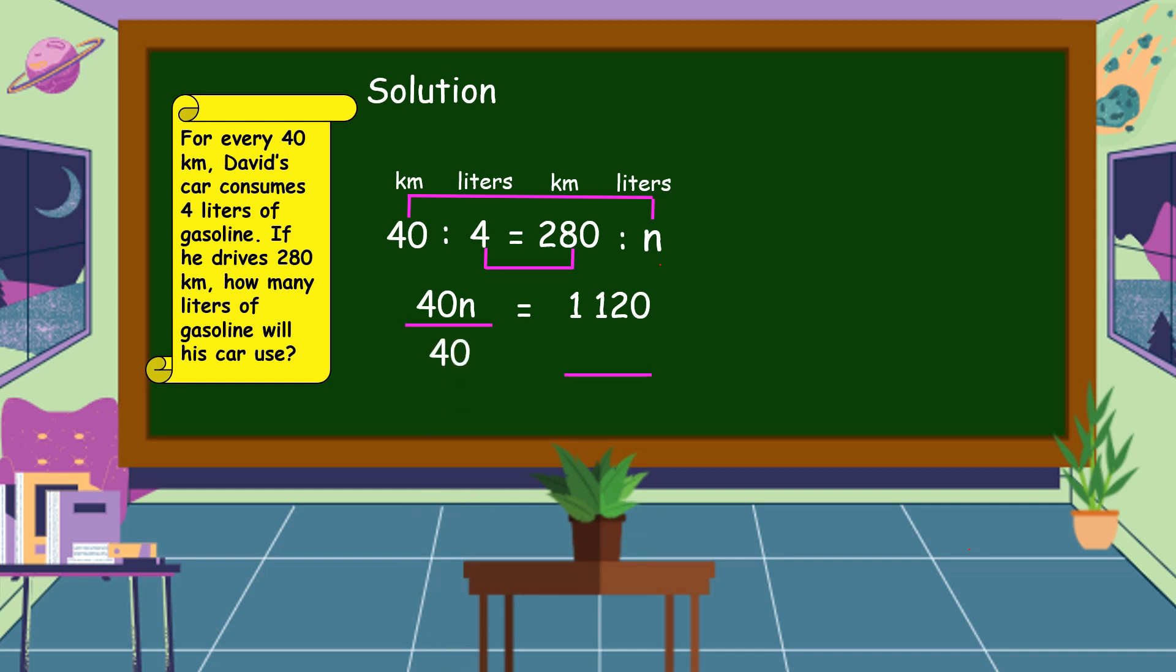To get the value of N, we're going to divide 40 on both sides of the equation to make the equation balanced. So 40N divided by 40 is equal to N. 1,120 divided by 40 is equal to 28. Therefore, our answer is 28 liters of gasoline.